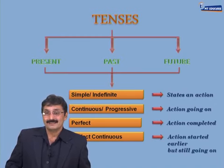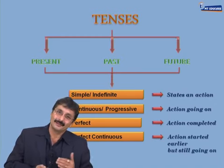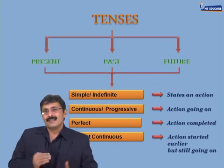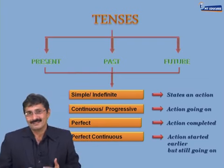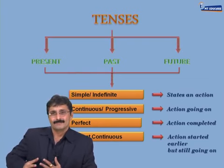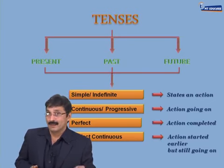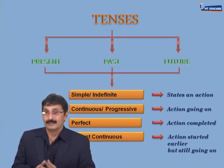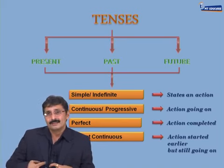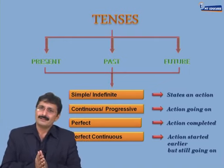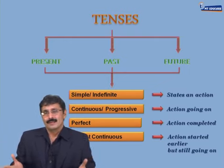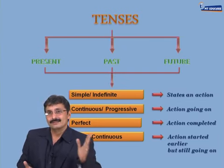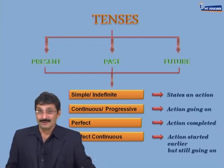Finally, the perfect continuous tenses describe an action that started in the past but is still continuing. Take the example of Sachin — he began playing cricket 20 years ago and is still playing today. So how do I join these two sentences using the perfect continuous tense? 'Sachin has been playing cricket since the last 20 years.' Amazing — and amazing are tenses!